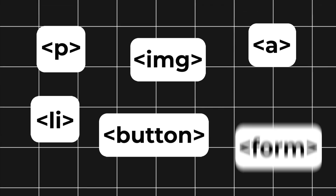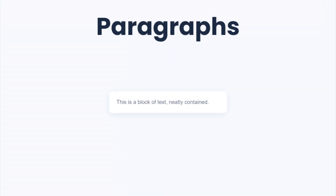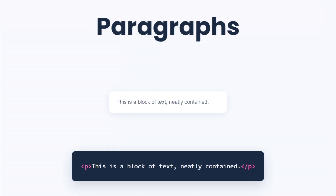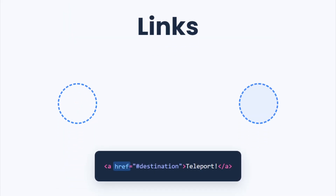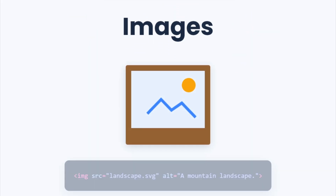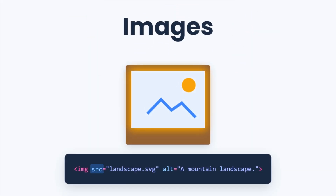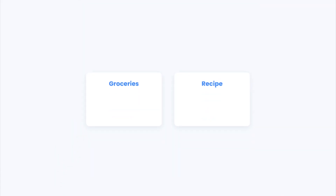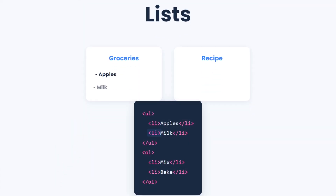Let's look at the elements you'll use the most. Paragraphs are like conversations in your living room — blocks of text containing your content. Links are like teleporters: click one, and you instantly jump to another page; they use the href attribute to know where to go. Images are like framed photos on your wall — they use the source attribute to find the file and the alt attribute to describe it for accessibility and SEO. Lists are simple in HTML: an unordered list is like a grocery list with bullet points, an ordered list is like a recipe with numbered steps, and each item is wrapped in an LI tag.